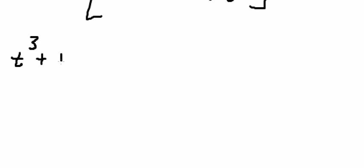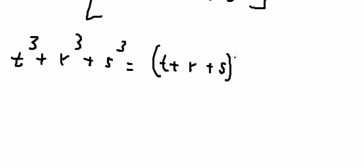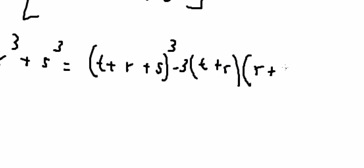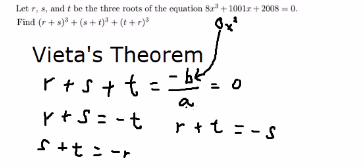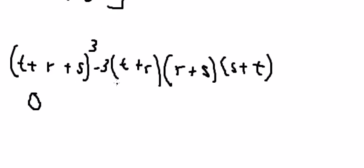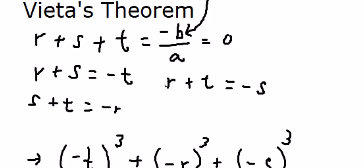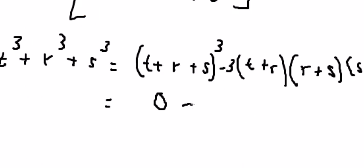We know that T³ plus R³ plus S³ equals (T plus R plus S)³ minus 3TRS times (T plus R plus S). Since T plus R plus S equals 0, this term is about 0, so we are left with the 3TRS part.